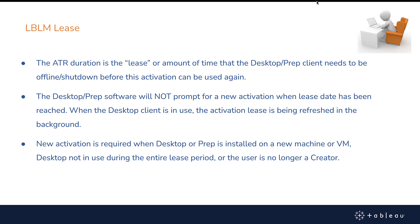The ATR duration, or lease value, represents the amount of time that the desktop client software must be offline or shut down before the activation can be used on a new machine. For example, if the ATR duration is set to the default 14 days and you're using VMs, and the VM is returned, it will be 14 days before this specific activation is available to be used again.